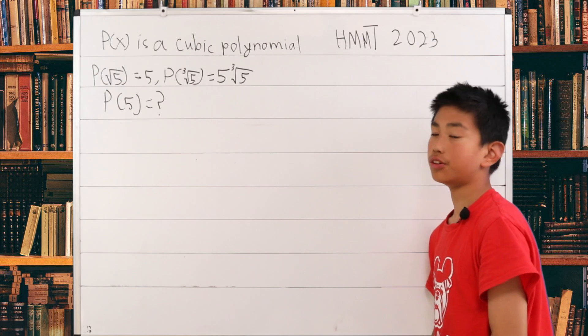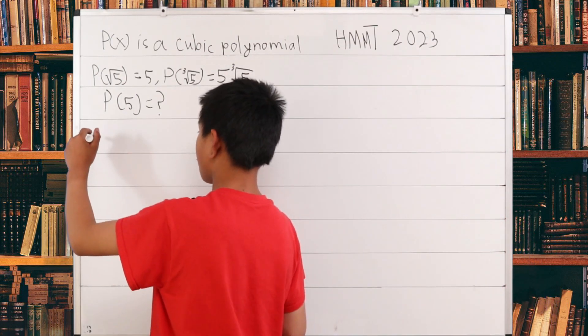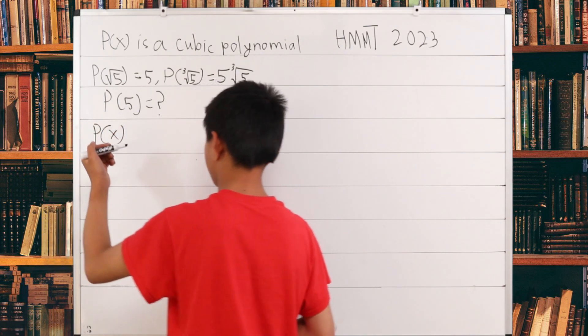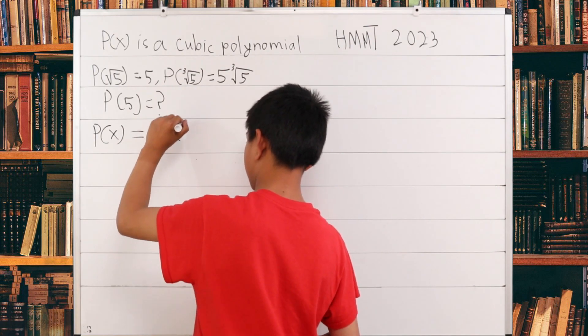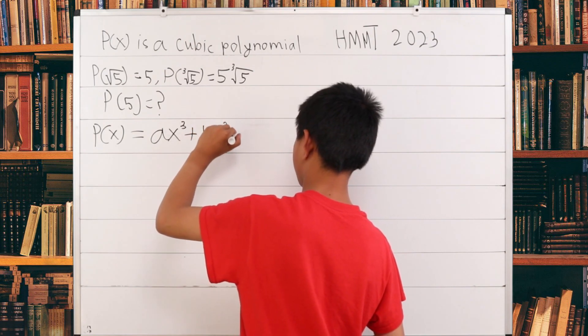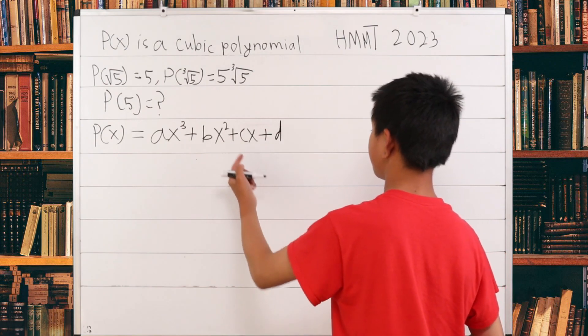The first thing we need to do is note what a cubic polynomial is. What it means is P(x) = ax³ + bx² + cx + d. That is our cubic polynomial.